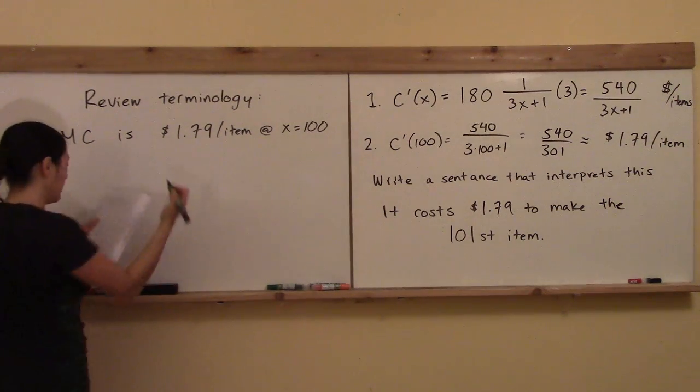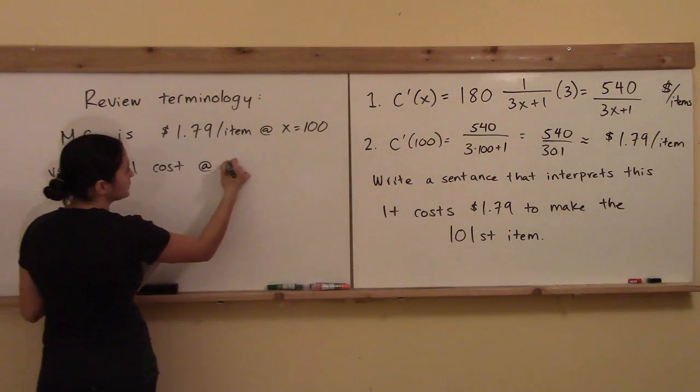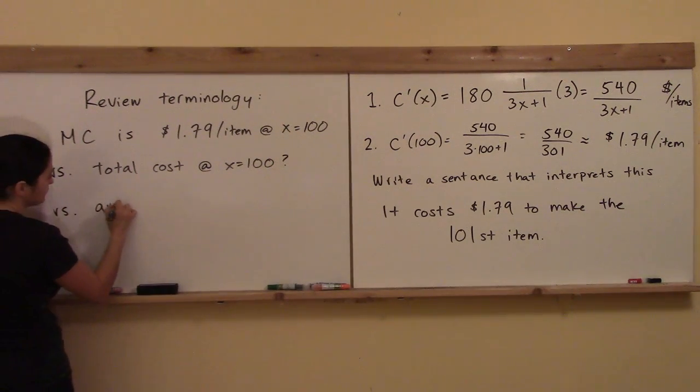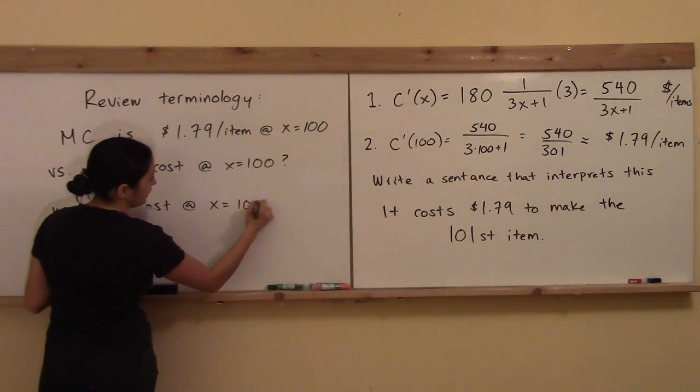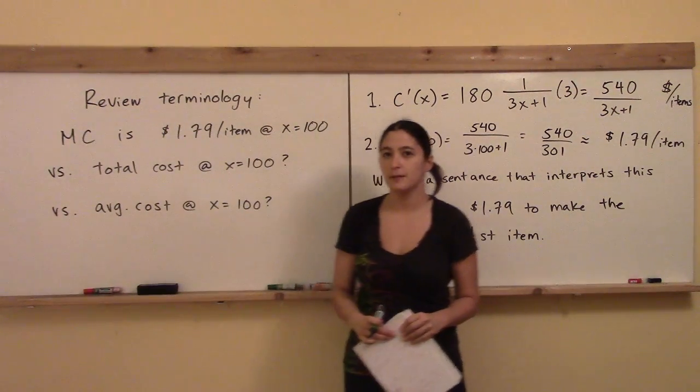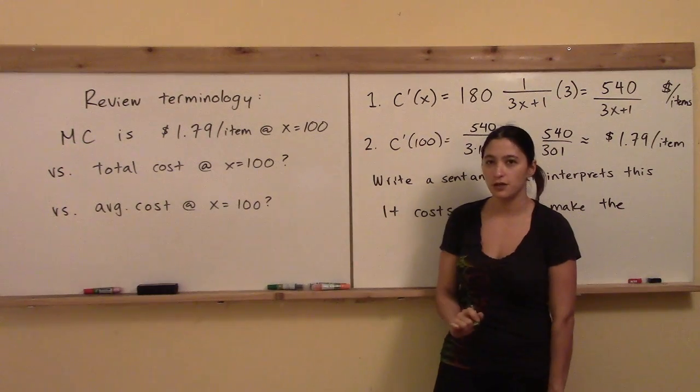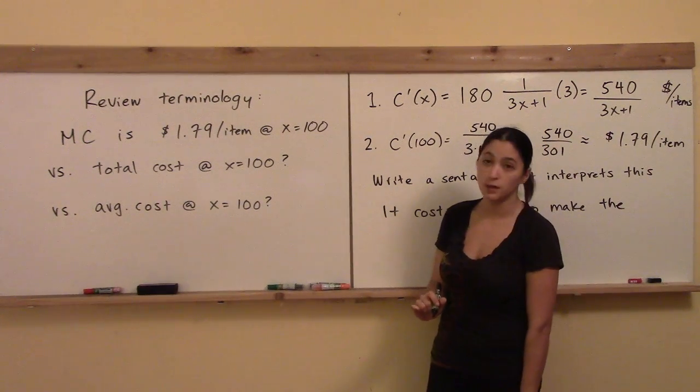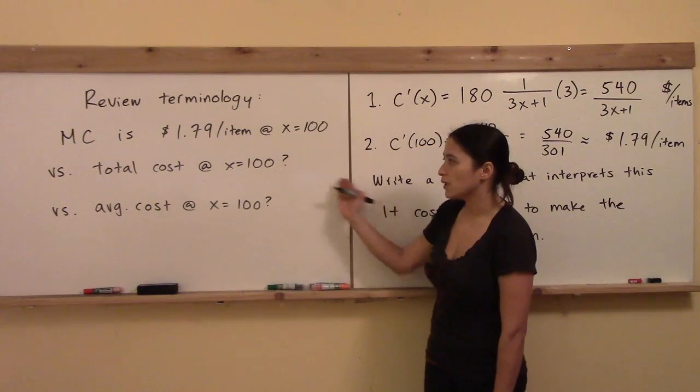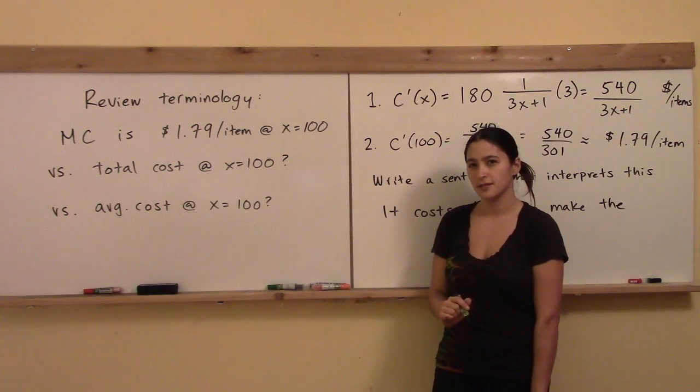So in this class, we have that the marginal cost is $1.79 per item at x equals 100 items, and we already talked about what that means. I just want to compare this with the total cost. So what if I asked you, what is the total cost at x equals 100 items? And let's compare that as well as what is the average cost at x equals 100 items. Now maybe you're inside a class on business calculus with me right now, and if you have a midterm or a final exam coming up, you may worry that any and all of these questions are fair game on the exam. So I want to make sure that you review and know how to answer each one of these questions.